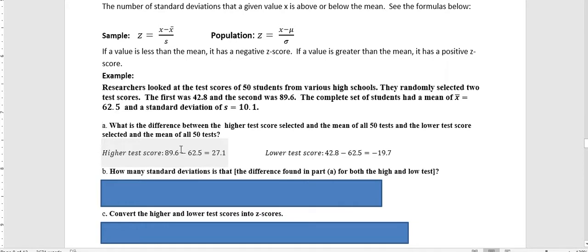For the higher test score, we're going to take the score that we were given, 89.6, and subtract the mean, 62.5, and we find that it has a difference of 27.1. For the lower test score, we're going to take the 42.8 and subtract the 62.5, and that gives us a difference of negative 19.7.